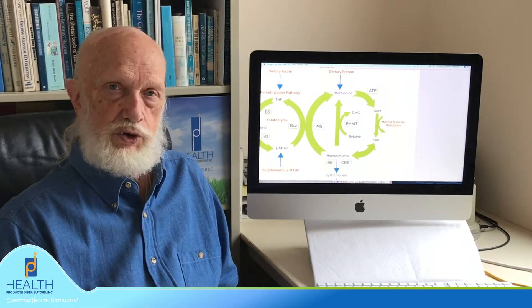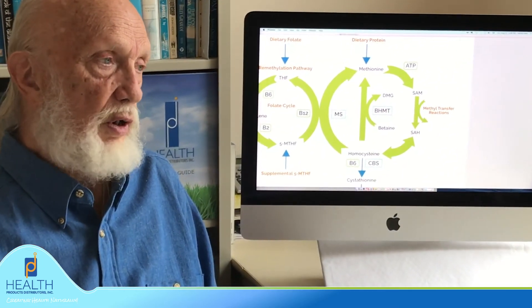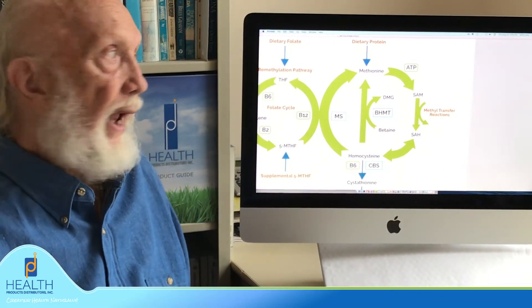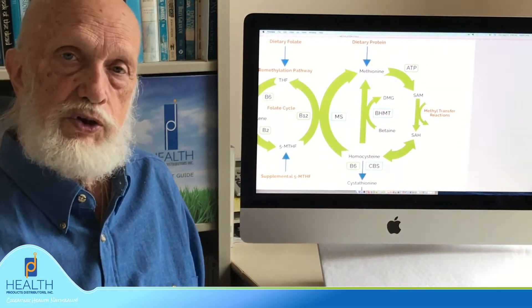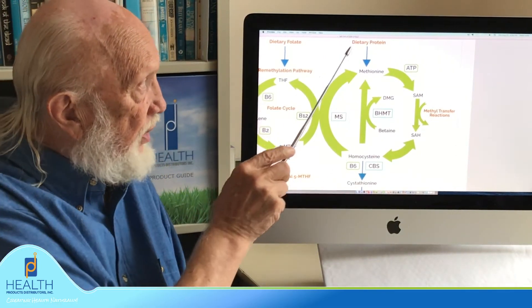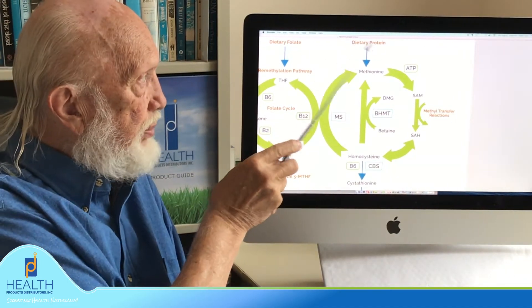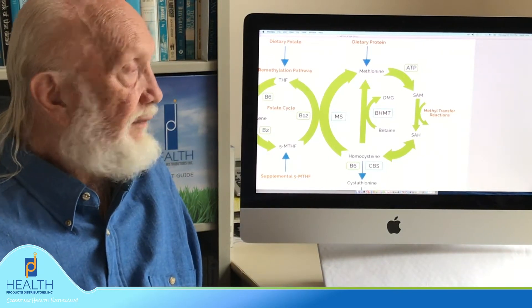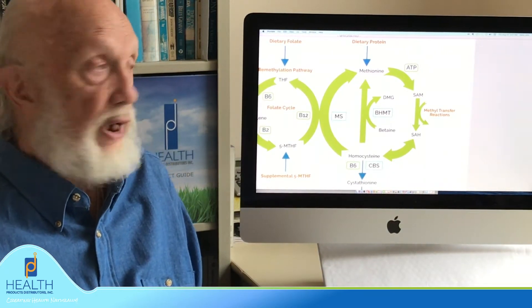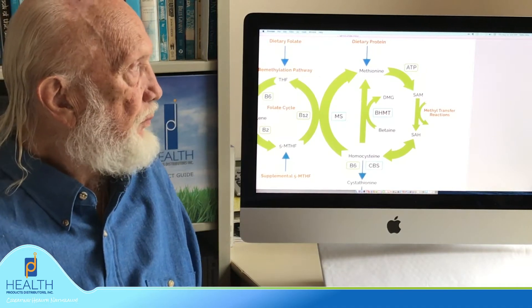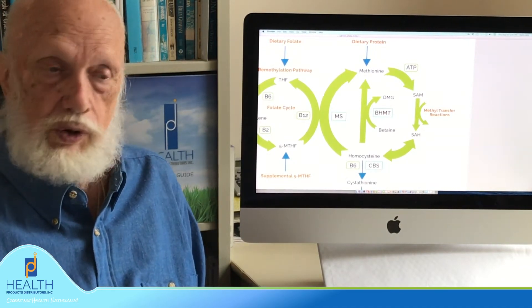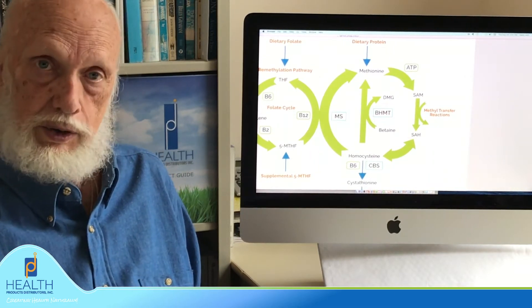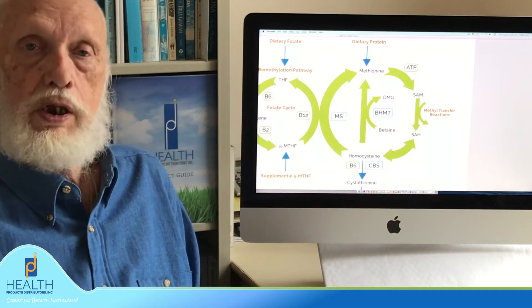The first part of the methylation cycle I want to talk about is where you take in dietary protein and in particular the essential amino acid methionine. In the diagram you can see dietary protein, one piece of that is methionine. This is a very important sulfur-containing amino acid and it's essential for the body. You can't make it within the body. You can recycle it within the body but you can't make it, so it has to come from a dietary source.